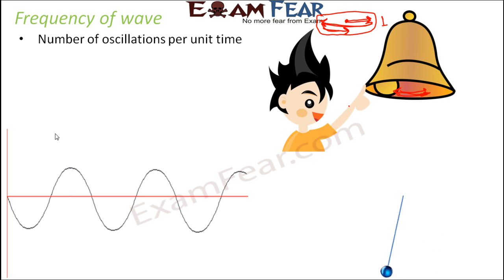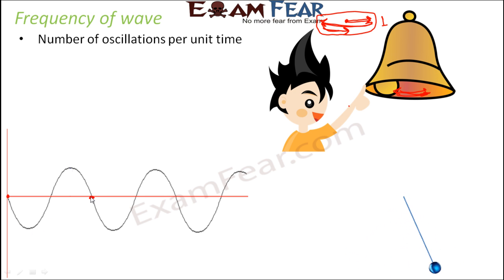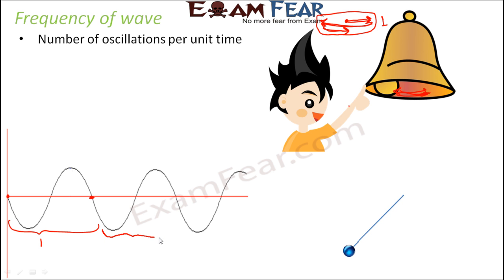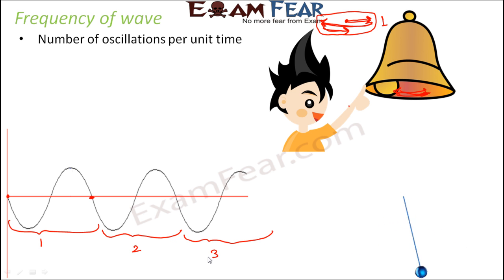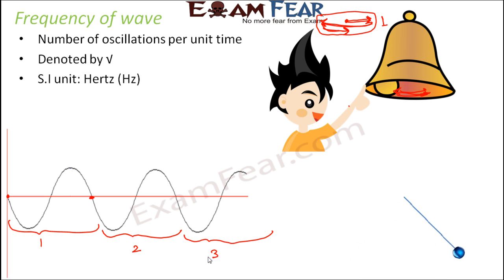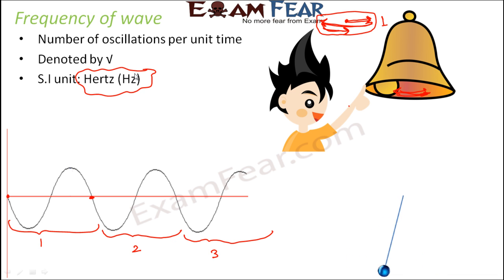Looking at this wave picture: one oscillation starts here and completes here — that is the first oscillation. From here to here is the second oscillation, and from here to here is the third oscillation. So how many oscillations it covers in a particular period of time is frequency, denoted by nu. The SI unit of frequency is hertz, named after the popular scientist.